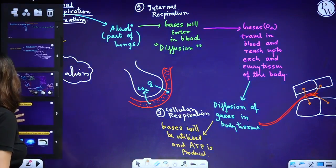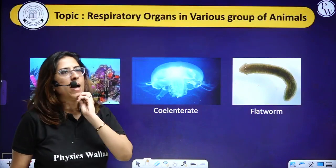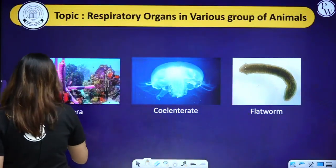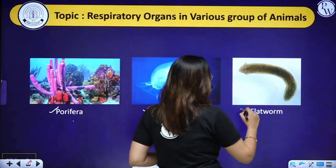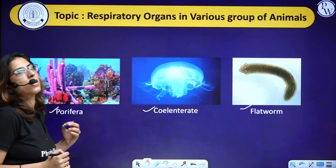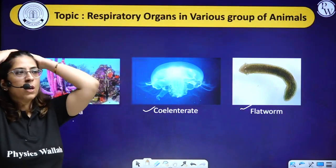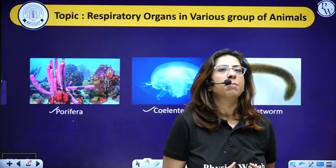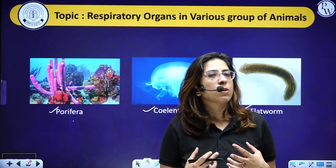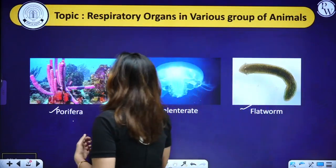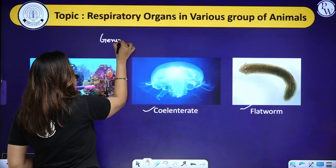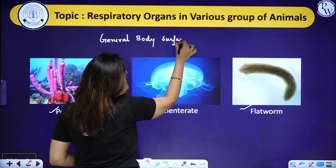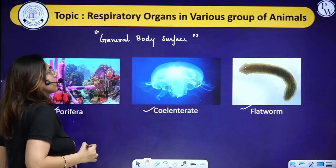Now moving on to respiratory organs in various groups of animals. Different groups of organisms have different types of respiratory structures. Starting from porifera, cnidarians, or platyhelminthes — their respiratory structure is the general body surface.